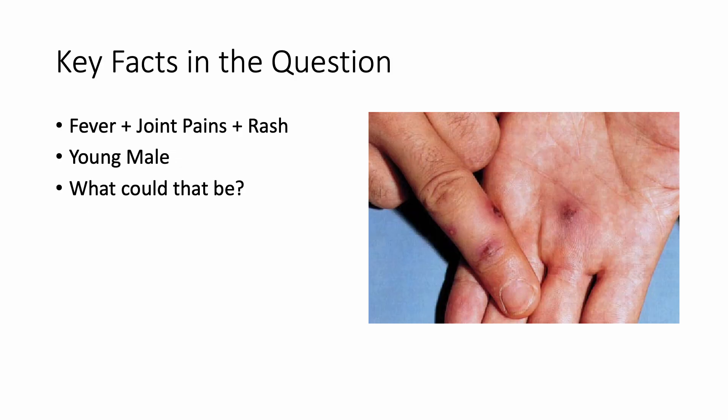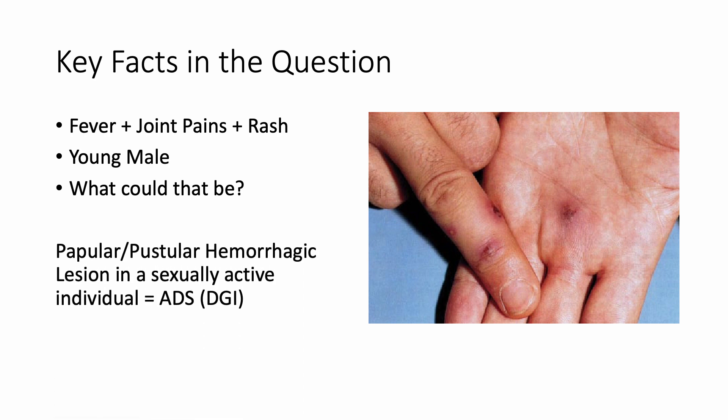The key facts in the question are: fever, joint pains, and a rash in a young male. If you see a papular, pustular, hemorrhagic lesion in a sexually active individual, we need to always think about ADS — arthritis-dermatitis syndrome — which is a form of disseminated gonococcal infection.